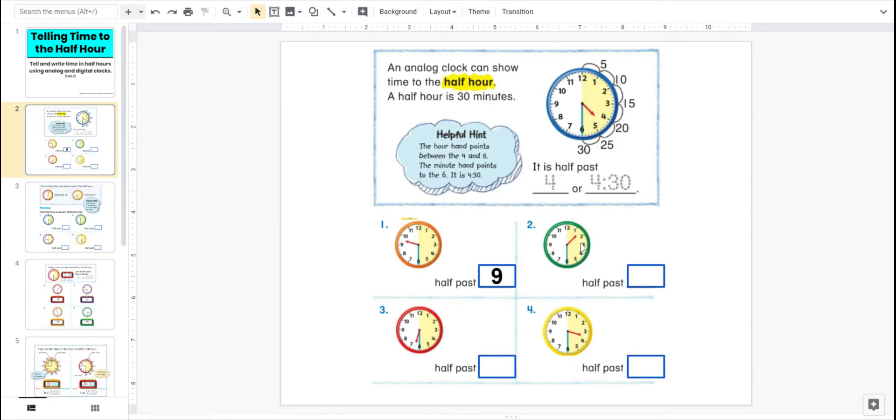This one, half past, good job, one o'clock. It's already gone past the one. It's moving around the clock. That one's a little tough because it's all down at the bottom, isn't it? It's between the six and the seven. So it's half past six. And this last yellow clock here, it's between the three and the four. Long hand's touching the six. So I know that means half past.